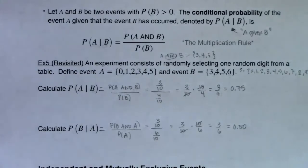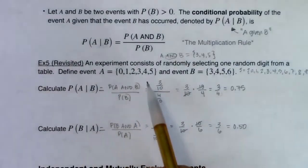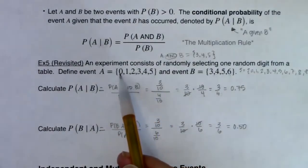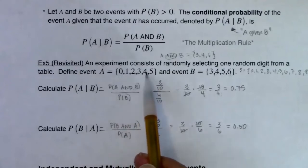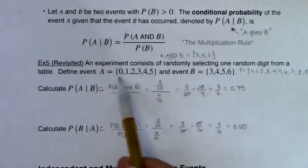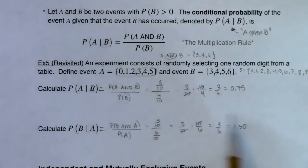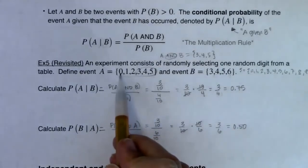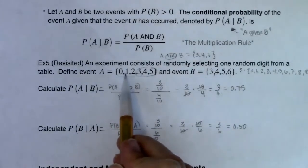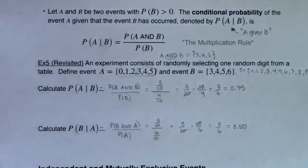Let's think about what that means. Event A happened — I definitely got a 0, 1, 2, 3, 4, or 5. Out of those numbers, how many were also in B? About half of them were — so half were in B, half weren't. That's why there's about a 50% chance of event B occurring. If you know you picked digit 0–5, there's about a 50% chance you also picked a digit that was in B.